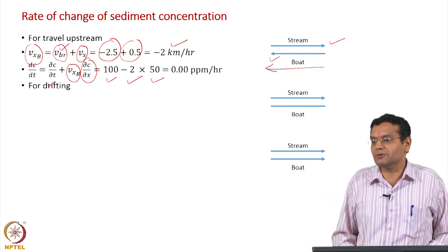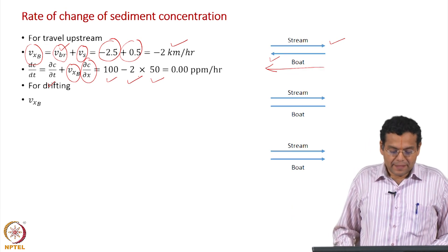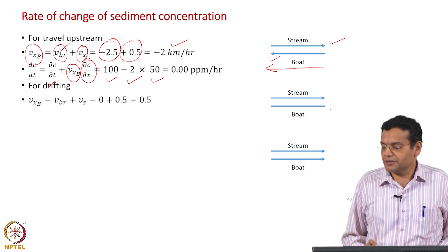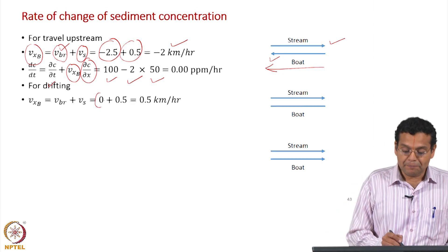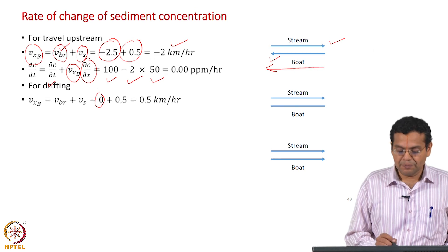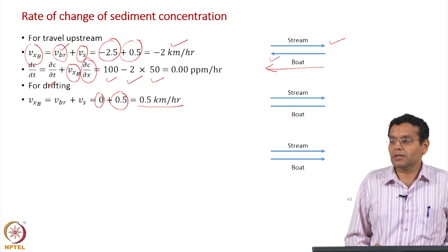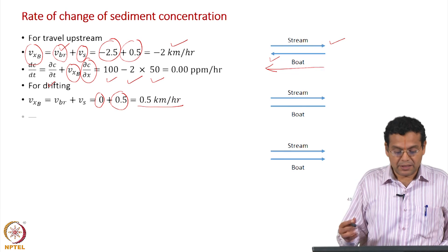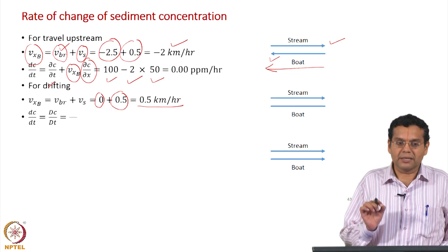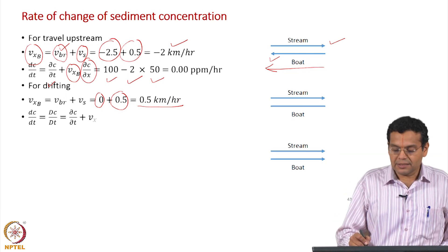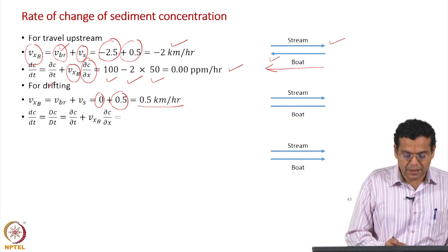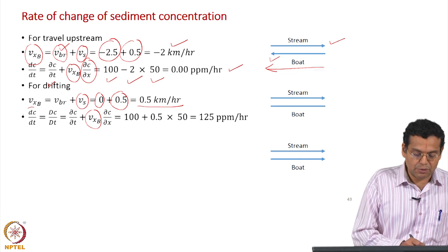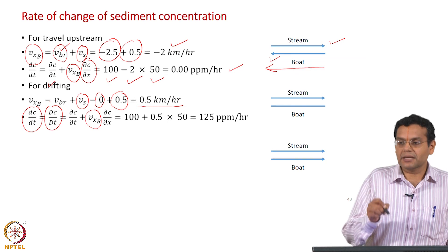For drifting: you just float along the stream, so the velocity of the boat relative to the stream is 0. Adding the stream velocity gives the velocity of the boat as observed by a stationary observer equal to 0.5 km/h — same as the stream velocity. In this case, the total derivative becomes the substantial derivative, because the velocity of the boat equals the velocity of the stream.